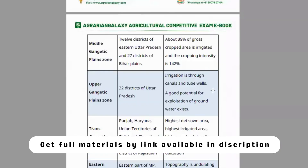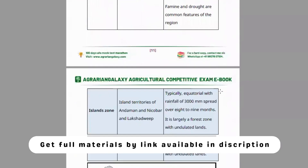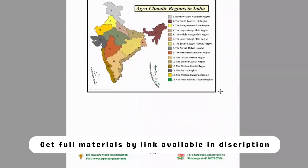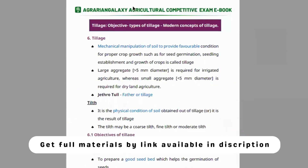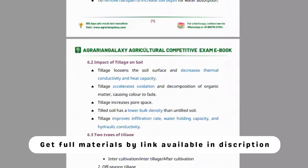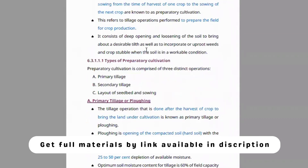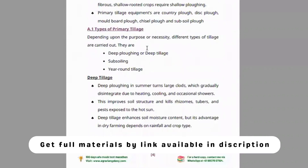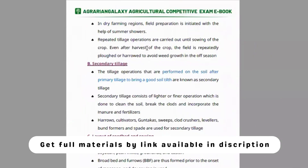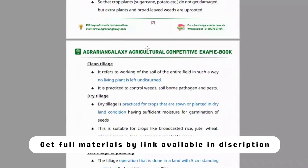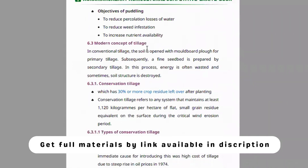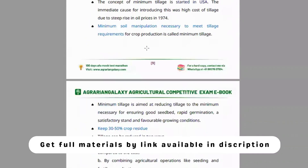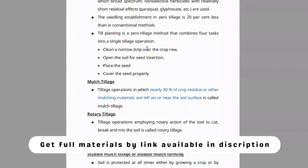Module six is all about tillage — objectives and types of tillage, preparatory tillage, primary tillage and its types, subsoiling, dry tillage, and modern concepts of tillage. Types of conservation tillage including minimum tillage and zero tillage are also explained.